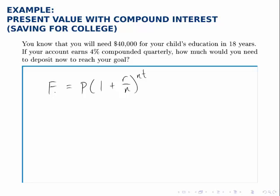So all we do is fill in all the pieces we know. The future value, the amount we want at the end, is $40,000. The present value is the unknown. The interest rate is 4%, so we write that as 0.04.